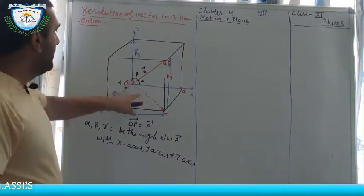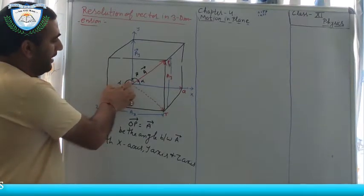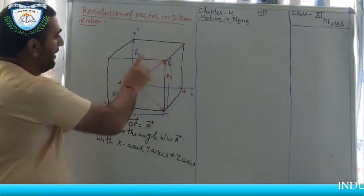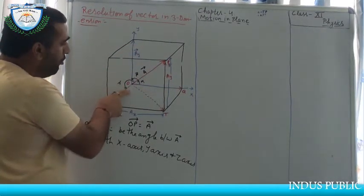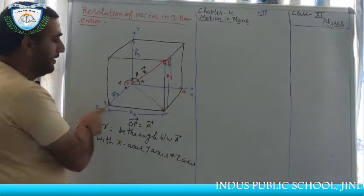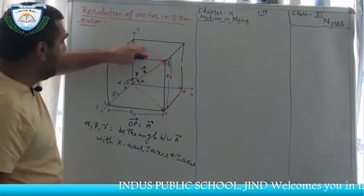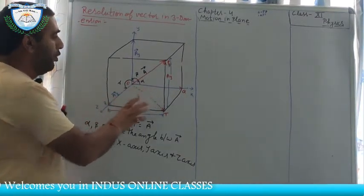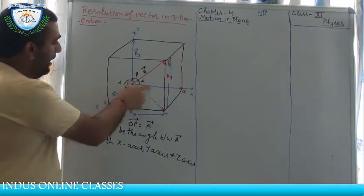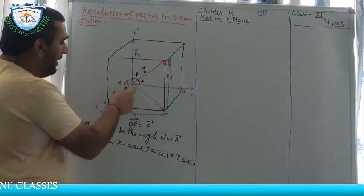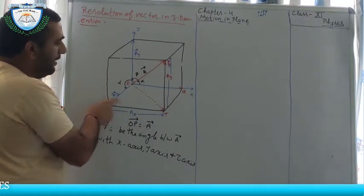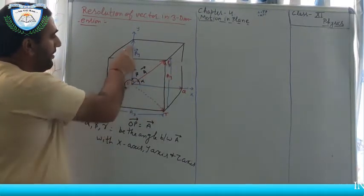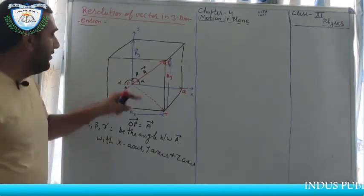We consider triangle OTP. OP lies in the x-y plane and OT belongs to the x-z plane. Applying the parallelogram law: one vector gives Ax, another gives Az, and their resultant is obtained. Similarly, Ax vector and Ay vector combine to give vector A — that is the resolution, or composition, of A.